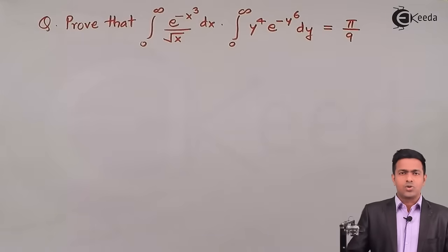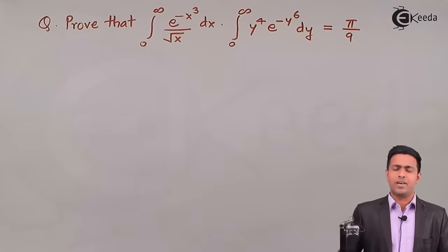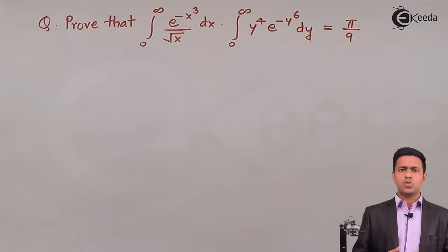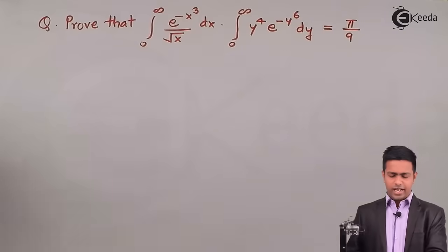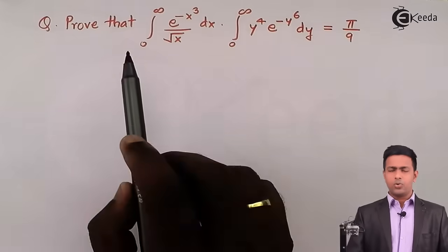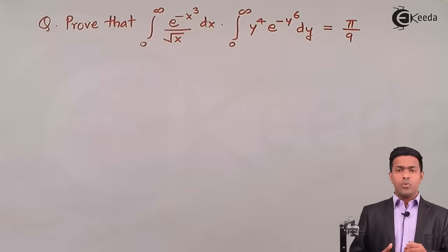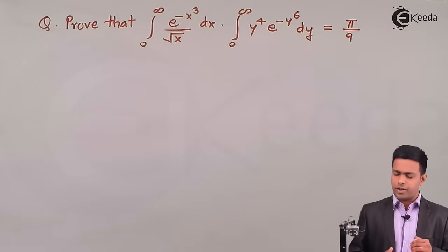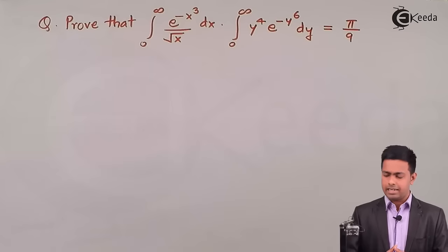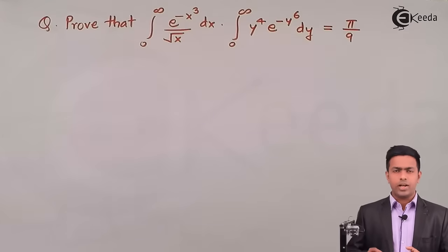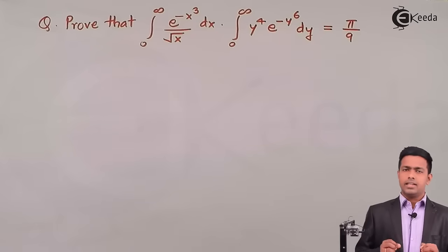Hello friends, here we are going to learn the numerical which is based on the definition of gamma function and we will see how to solve such numericals using the gamma function. The question is: prove that the integration from 0 to infinity of e^(−x³) / √x dx, multiplied by the integration from 0 to infinity of y⁴ · e^(−y⁶) dy, is equal to π/9.